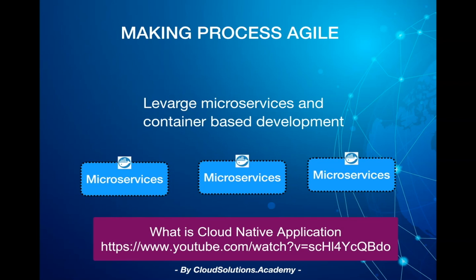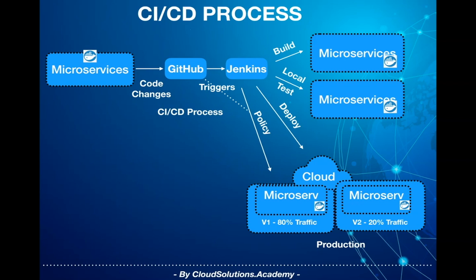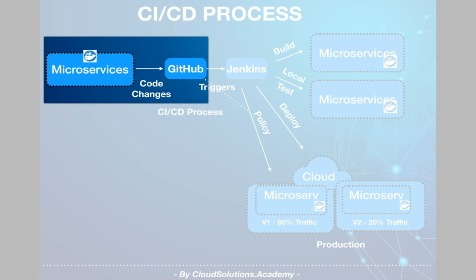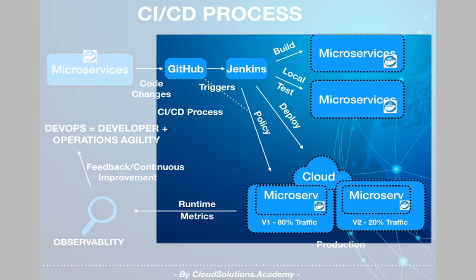So how do developers and operators work together in a DevOps team? From a developer's perspective, a developer basically develops, tests, and builds out the applications into containers as deployable units. While operators basically create the deployment templates, artifacts, apply configurations and security policies, and perform deployments to the target runtime environment.